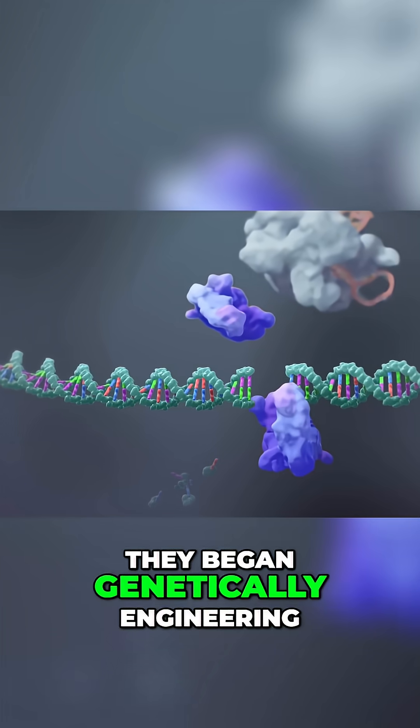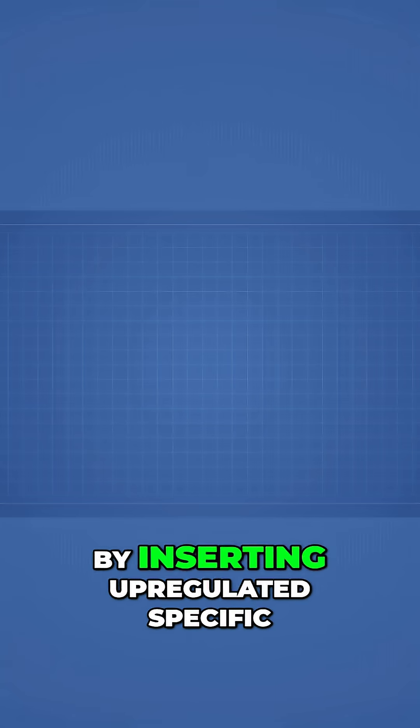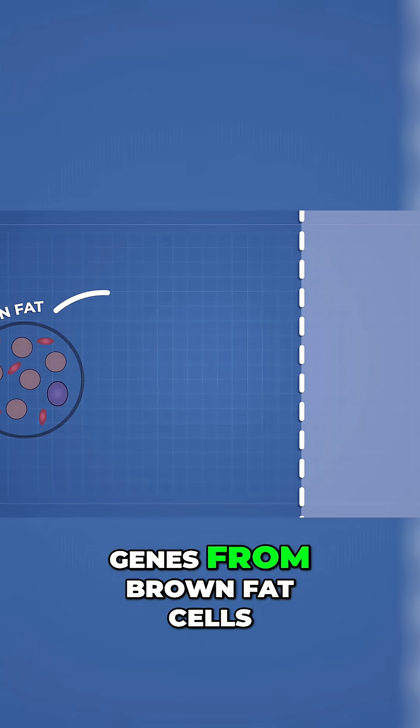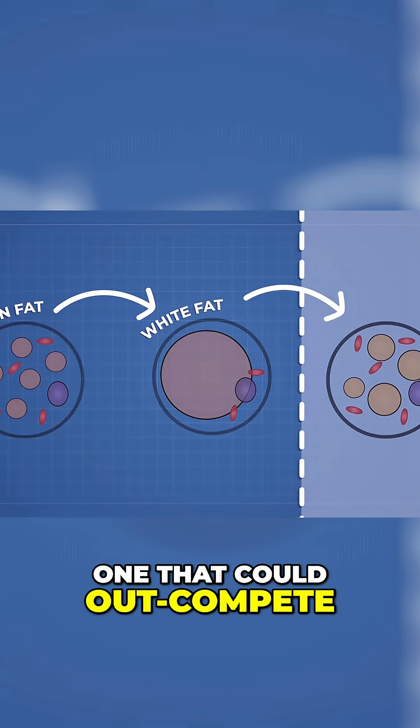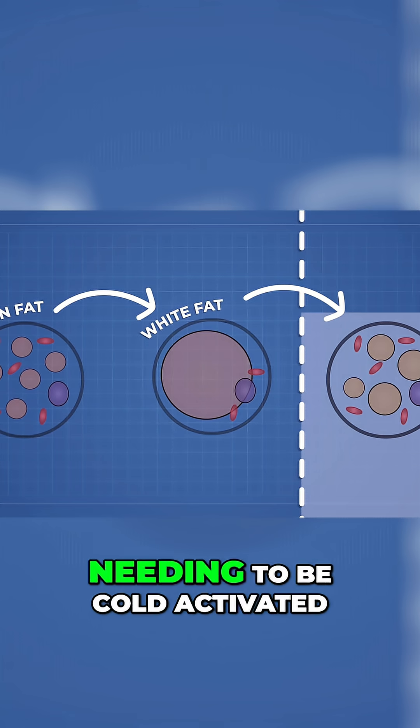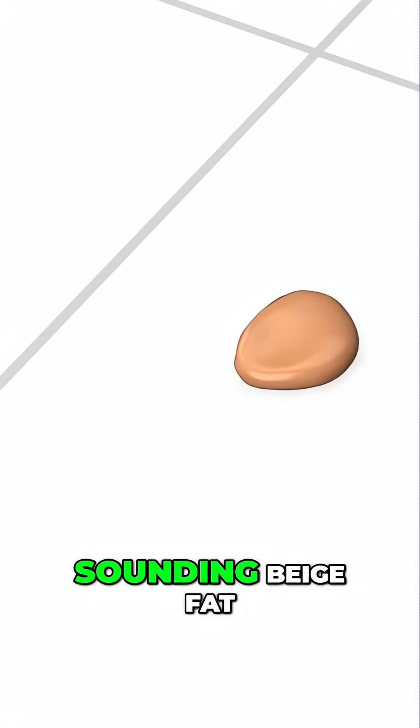Using CRISPR, they began genetically engineering white fat cells to behave more like brown fat. By inserting upregulated specific genes from brown fat cells, they aimed to create a new kind of cell, one that could outcompete cancer for nutrients without needing to be cold activated. They called these hybrid cells the slightly unattractive-sounding beige fat.